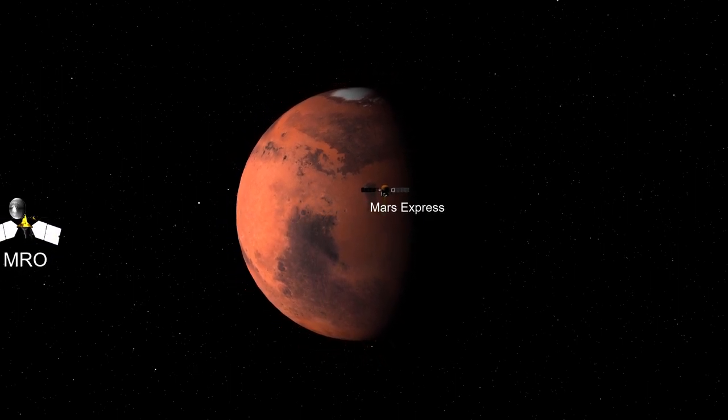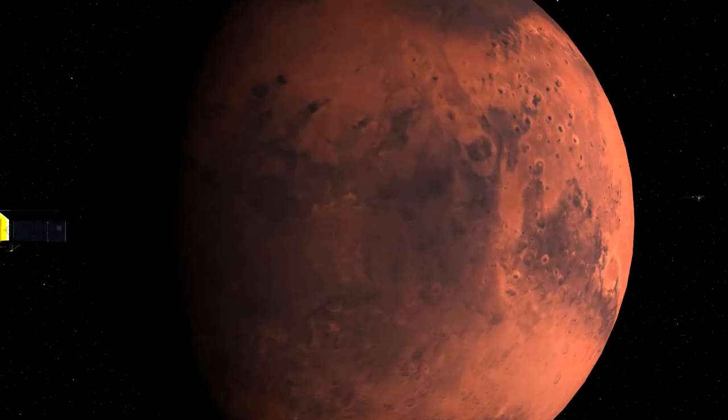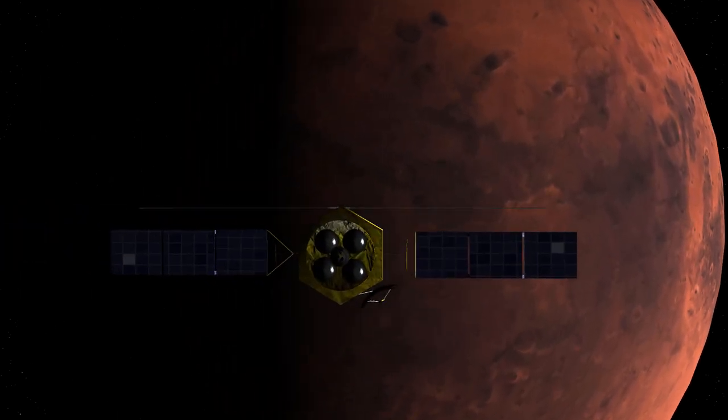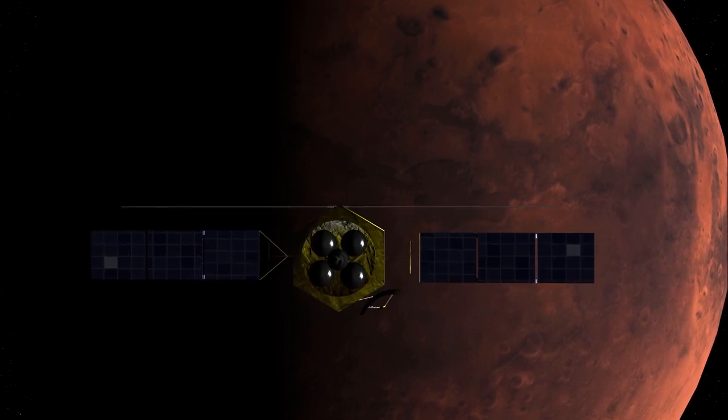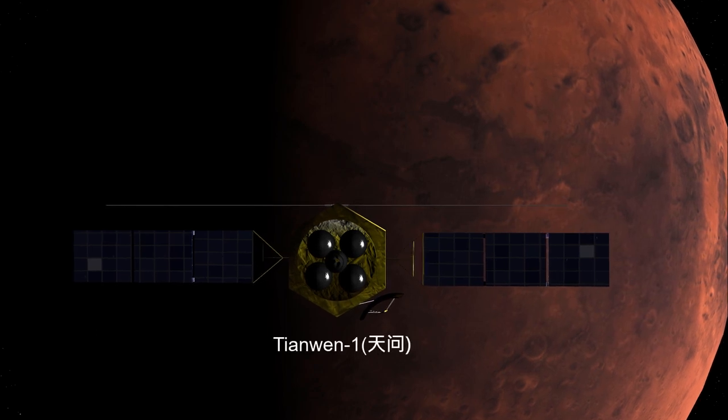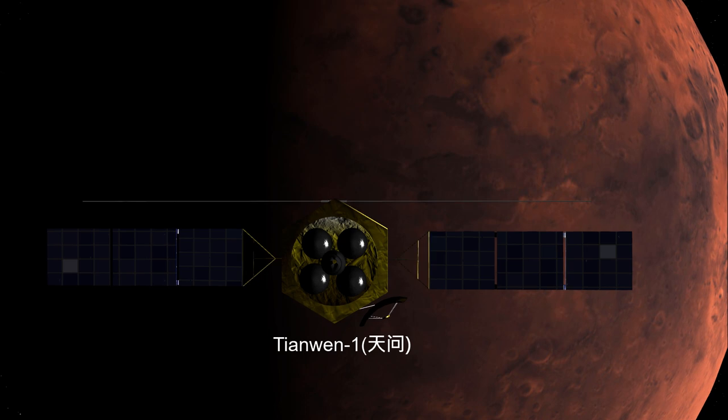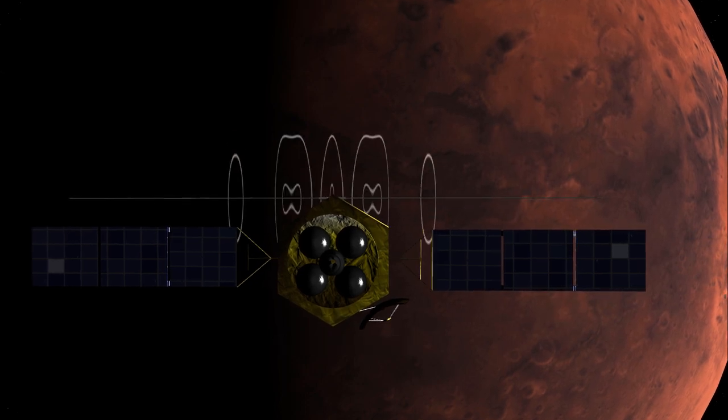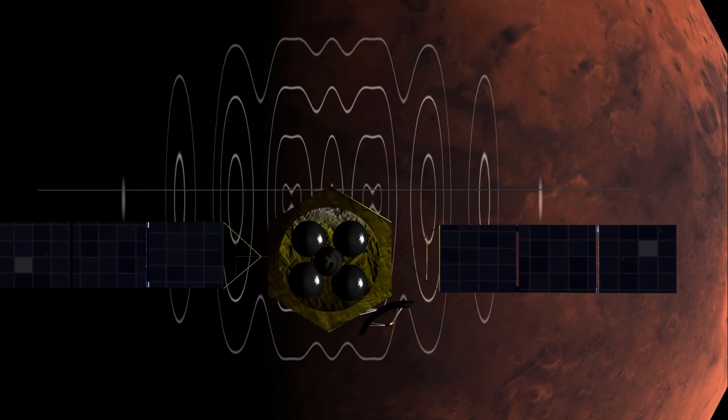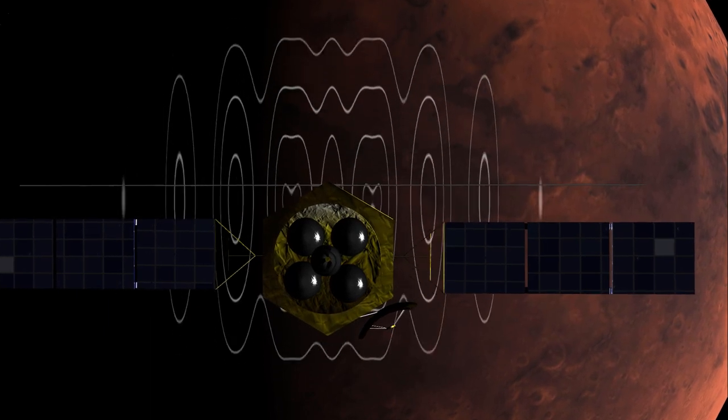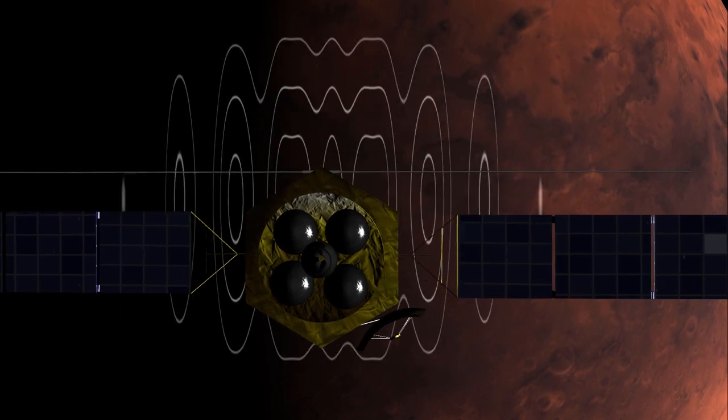But not just rocks, water ice can also be detected from orbit. Now a new spacecraft has joined the quest for water and other resources beneath the surface of Mars. NASA Tianwen-1 was launched in 2020. Using its Mars Orbiter Subsurface Investigation Radar or MOSIR sensor, Tianwen-1 is able to look beneath the surface of Mars. This is how the MOSIR sensor is able to sense this part of our universe.